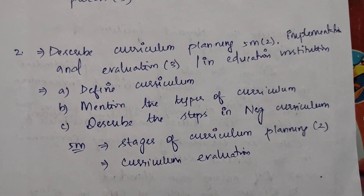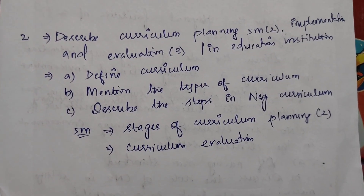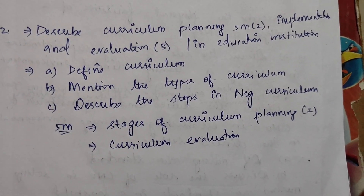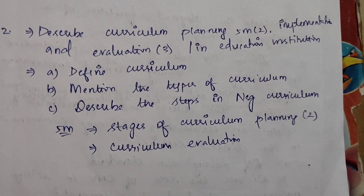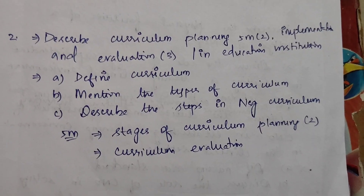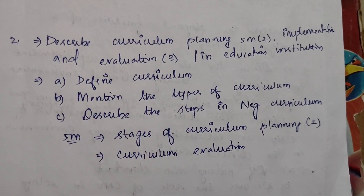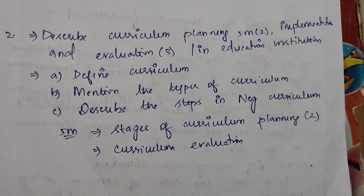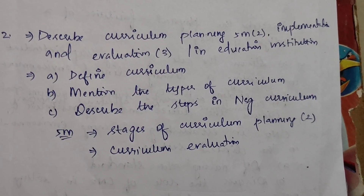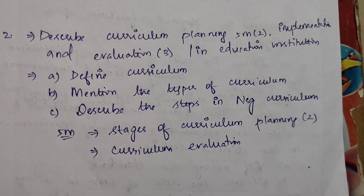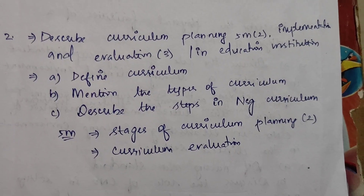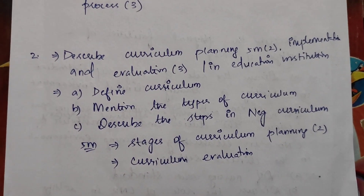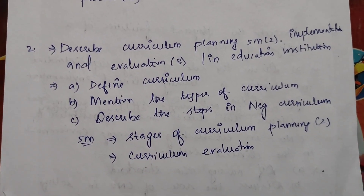Next, define curriculum and mention the types of curriculum. Describe the steps in nursing curriculum — this appears once in 15 marks. In 5 marks, stages of curriculum planning appears two times, and evaluation appears once in 5 marks.